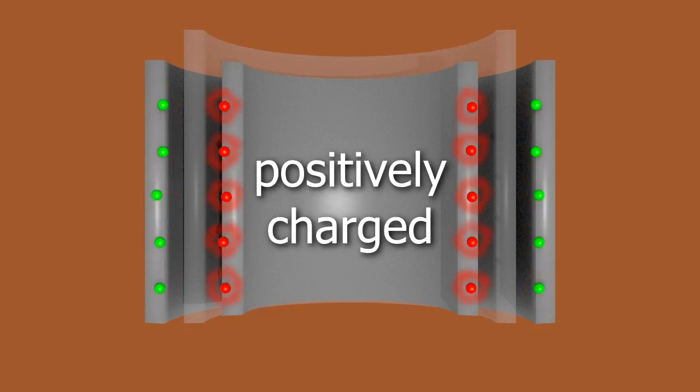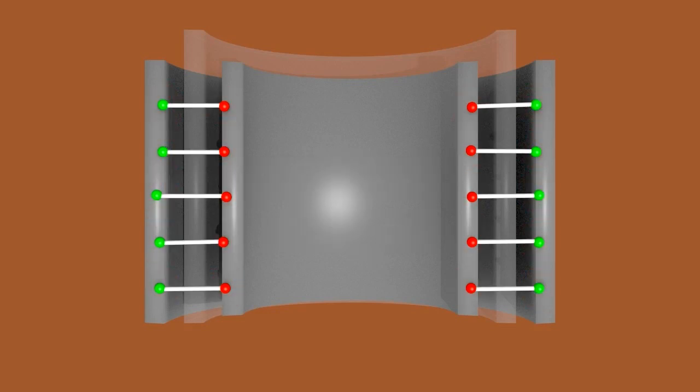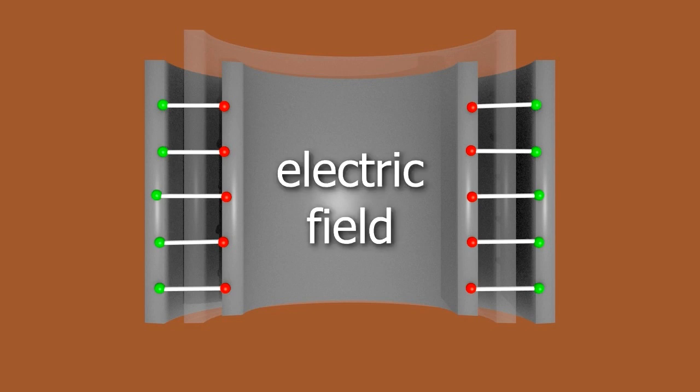One plate is negatively charged, and the other is positively charged. We can also draw a line between each pair of charges, representing the electric field. The closer the lines are together, the stronger the electric field.